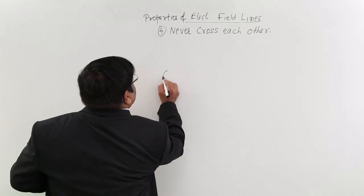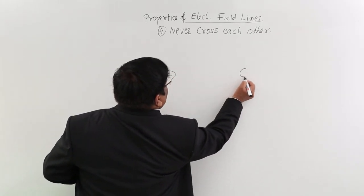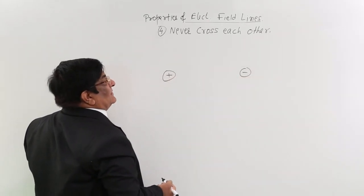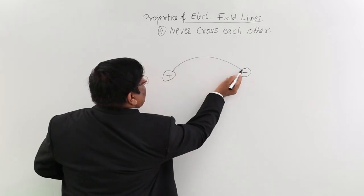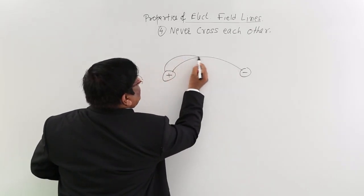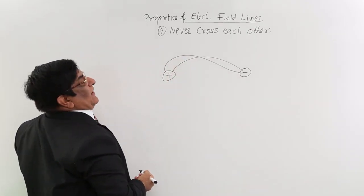If there is a positive charge here and a negative charge here, then this line goes like this and this line goes like this. This cannot happen.